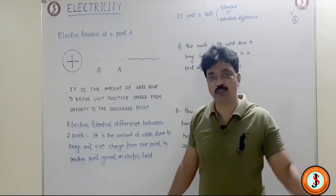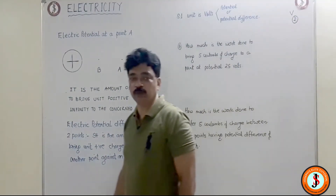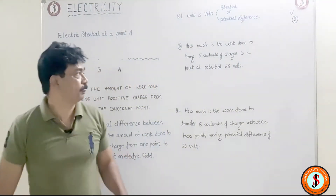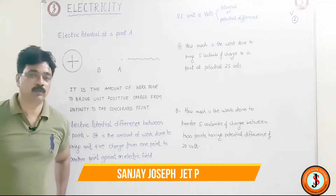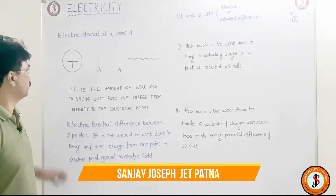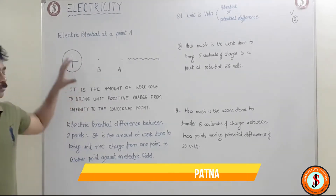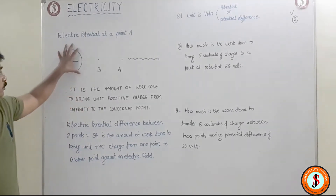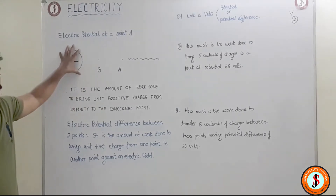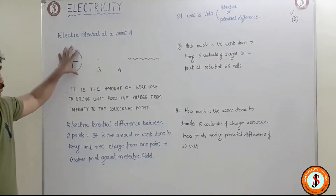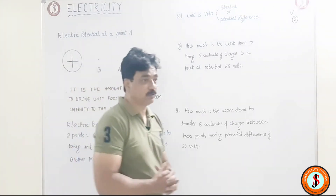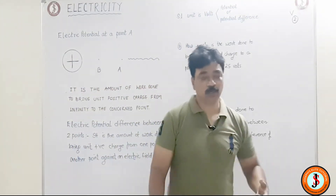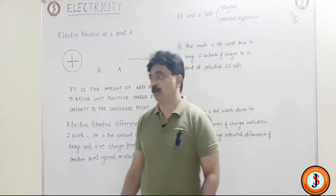Welcome to video 2. We are discussing electricity — we had gone till charges. Now let us try to understand: we have got a potential, we have got a positive field over here. Say for example there's a body which is heavily positively charged.